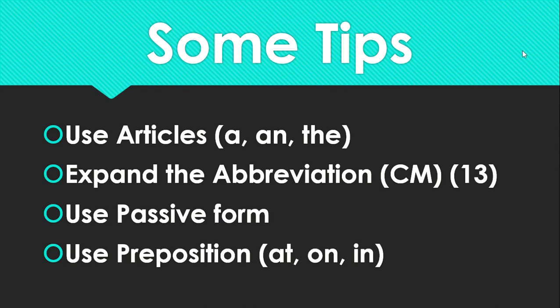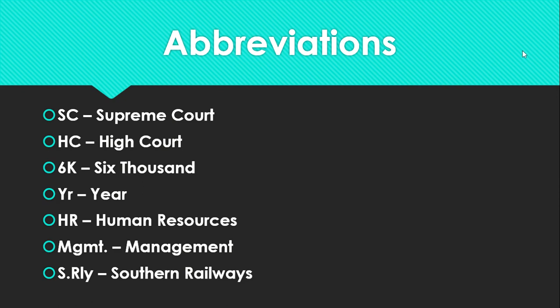Those are the four tips to remember when expanding a headline. The slide also shows common abbreviations and their expanded forms: SC — Supreme Court, HC — High Court, 6K — six thousand, HR — Human Resources, MGMT — Management, SRL — Southern Railways. These are abbreviations commonly found in newspaper headlines.